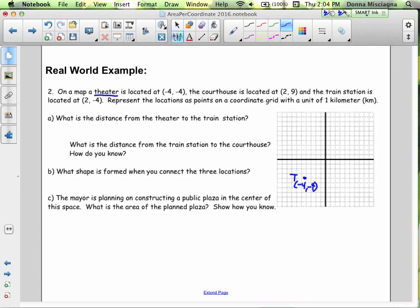The courthouse is located at 2, 9. So 1, 2, 1, 2, 3, 4, 5, 6, 7, 8, 9. Alright, we'll put C for courthouse.